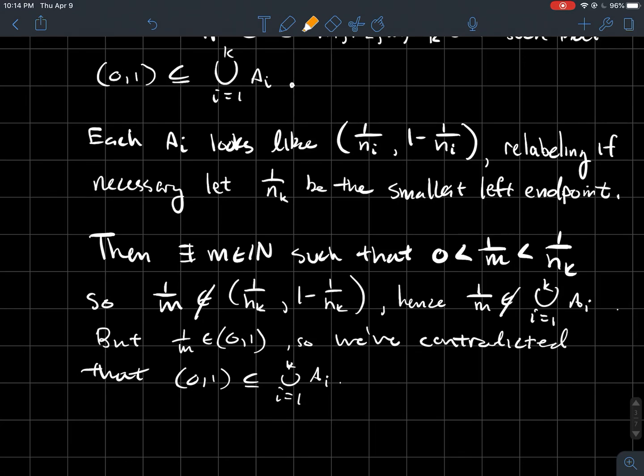And so what would that mean then? That means that that number 1 over M is not contained inside of this interval. We're saying this number is to the left of this endpoint, so it's not in there. And so hence, if this is the farthest left that I go for any of the capital A's, that means 1 over M can't be in the union of the capital A's.